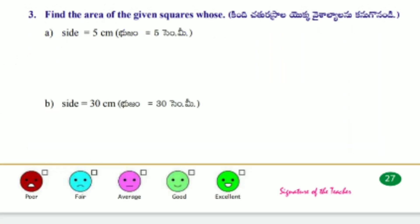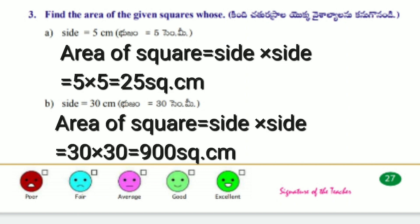Third one, find the area of the given squares whose: a) Side equals 5 cm. Answer: Area of square formula is side times side equals 5 times 5 equals 25 square cm.